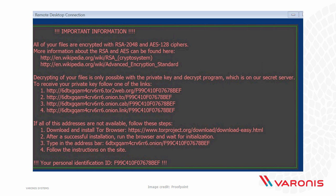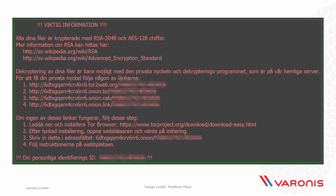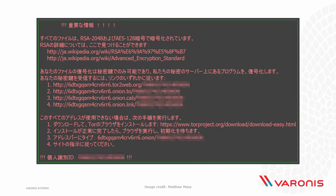The nature of the internet and the way ransomware is distributed means you're going to get people from all over the world getting infected. So Locky actually localizes the instructions — they've gone to the effort of translating the whole thing into multiple different languages in order to increase their chances of being paid the ransom. Even the Wikipedia links to RSA and AES have been localized, in this case into Japanese.